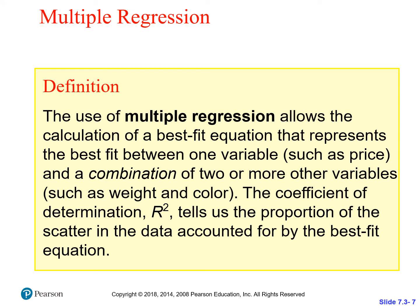A multiple regression allows us to calculate a best fit equation that fits between one variable, such as price, and two or more variables, such as weight and color. Multiple regression allows us to predict price based on more than one variable, which is very useful because we might want to know the weight and color together. That R squared value tells us the portion of the scatter in the data accounted for by the best fit equation. We're not going to do anything mathematically with multiple regression — just know that it exists and that we often want to know how multiple variables can influence a single variable, such as how weight and color can predict the price of a diamond.